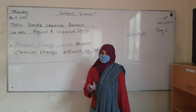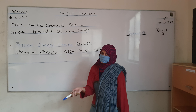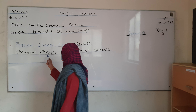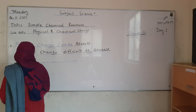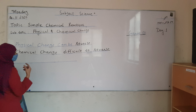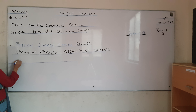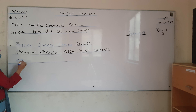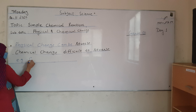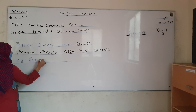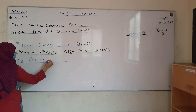You will see — it is a fruit salad. The things can be converted from one to another by physical changes, which can be reversed. You can separate them out.